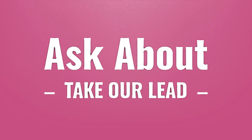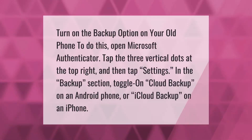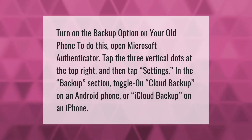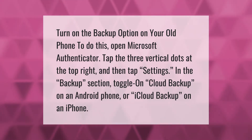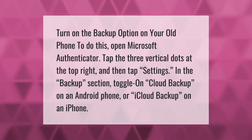Turn on the backup option on your old phone. To do this, open Microsoft Authenticator, tap the three vertical dots at the top right, and then tap Settings. In the backup section, toggle on Cloud Backup on an Android phone or iCloud Backup on an iPhone.